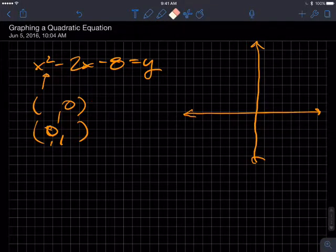Hopefully you paused and waited or thought about it. This, of course, when y is equal to 0, this is the x intercept, and when x is equal to 0, that is the y intercept.